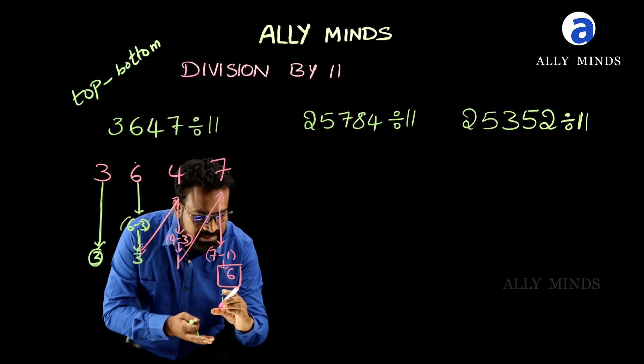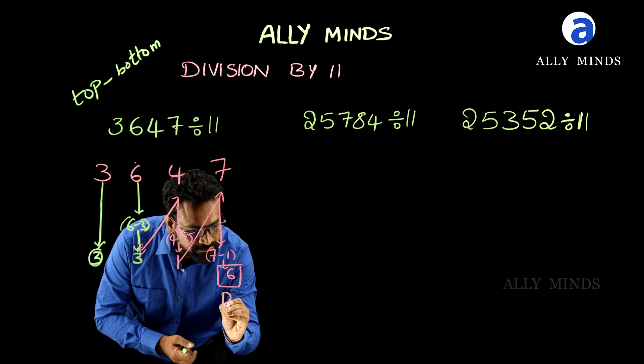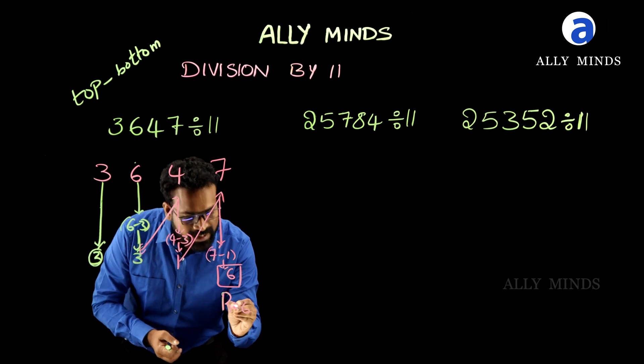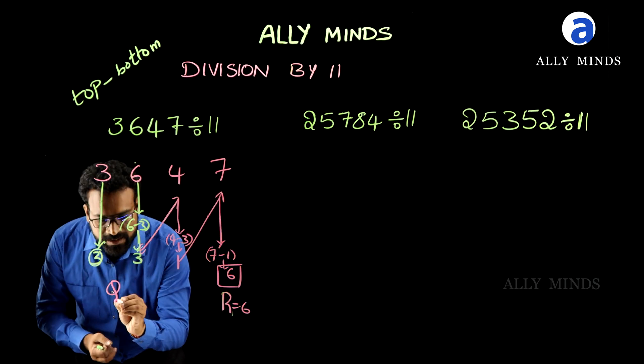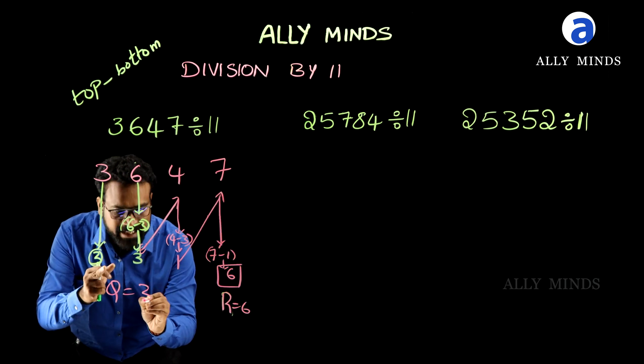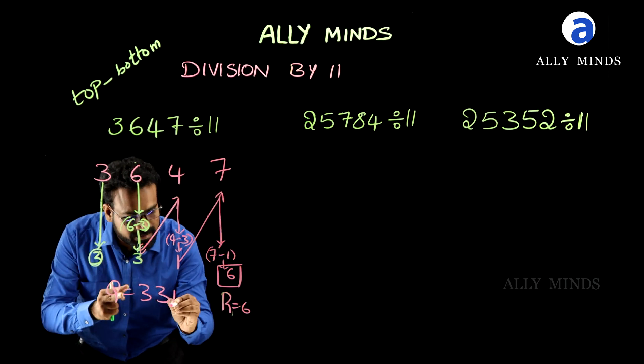So, remainder is 6 and the remaining numbers are the quotient: 3, 3, 1.